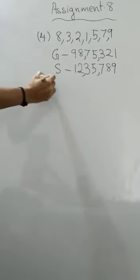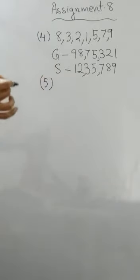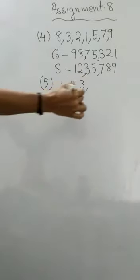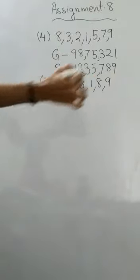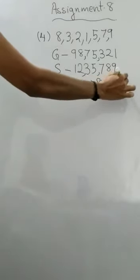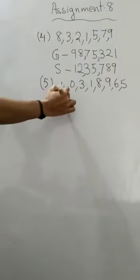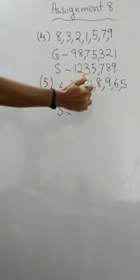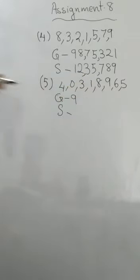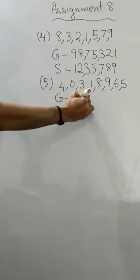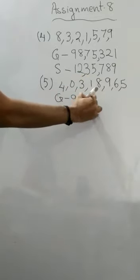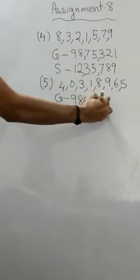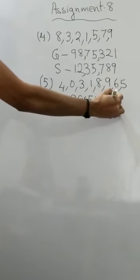Next set is 4, 0, 3, 1, 8, 9, 6, 5. So we have to write the greatest and the smallest here also. For the greatest, you will write the biggest number first. It is 9, then 8, then 6, then 5, then 4, then 3, then 1 and then 0.